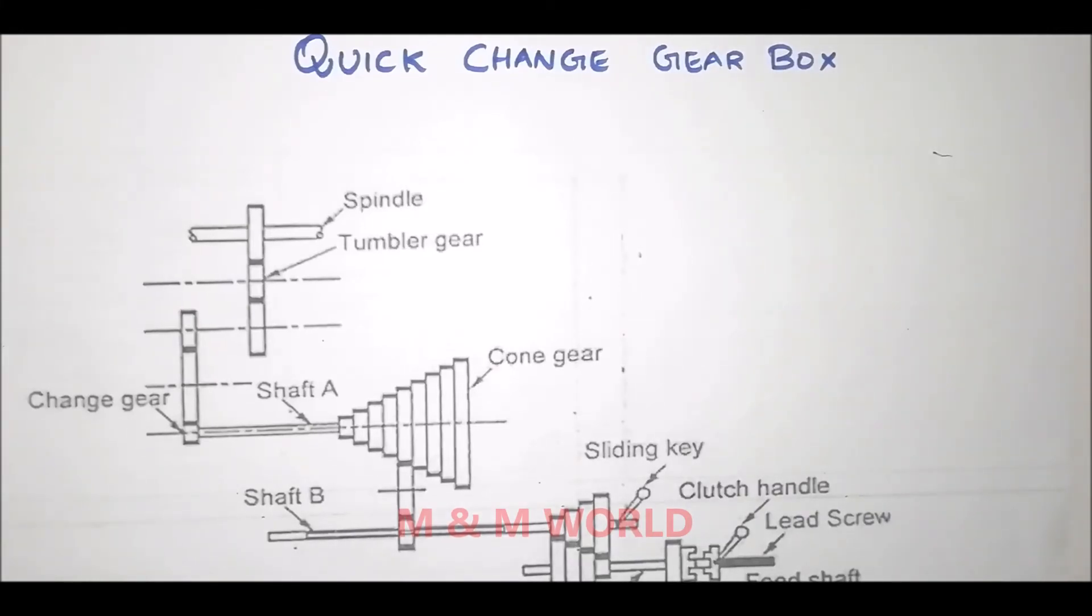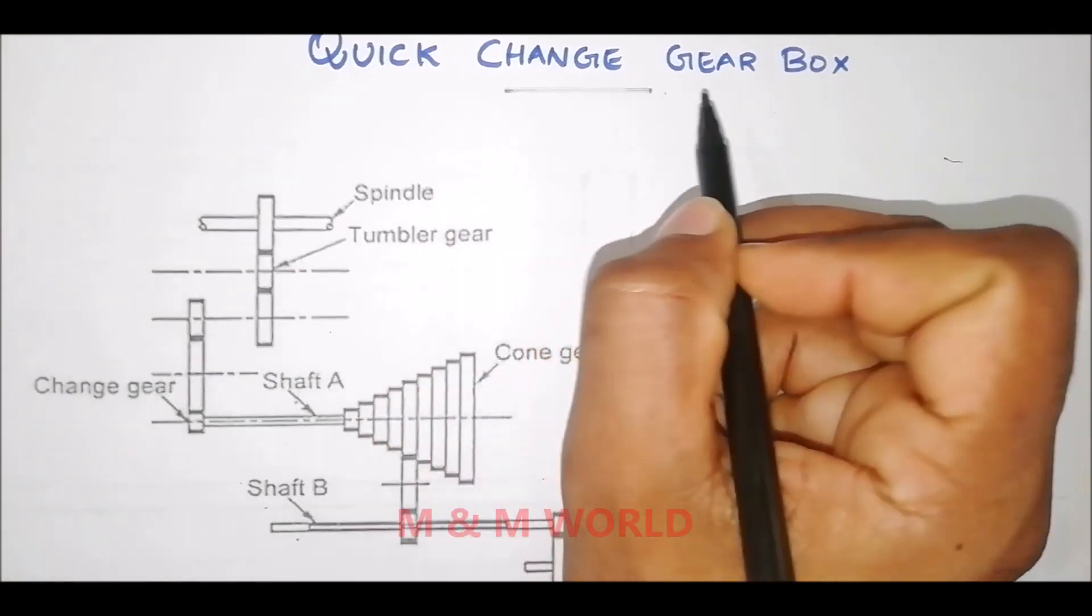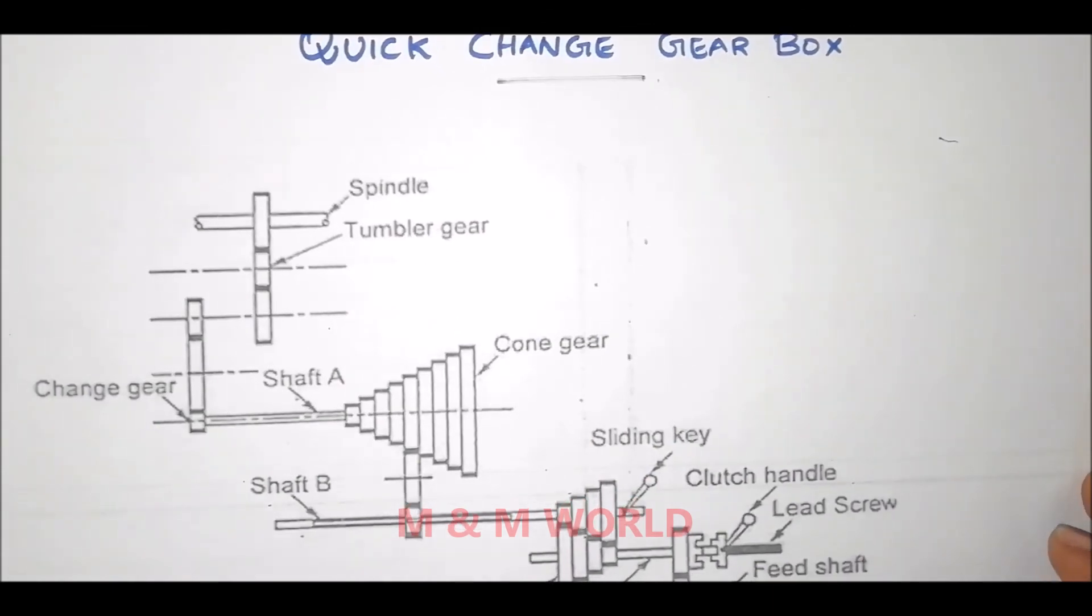Hello everyone, welcome to my video on feed mechanisms on lathe. In this video we will study about quick change gearbox. A quick change gearbox is used to get various power feeds in the lathe. The motion is transmitted from the spindle gear to the lead screw or the feed shaft.